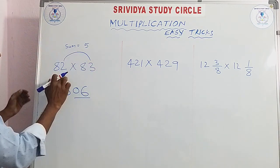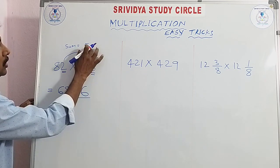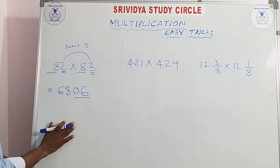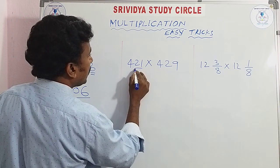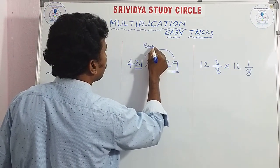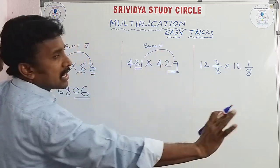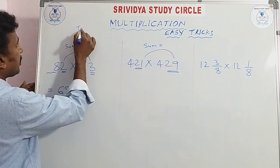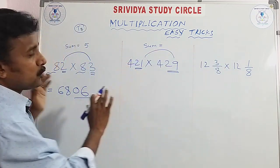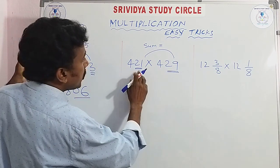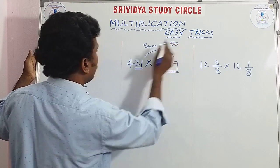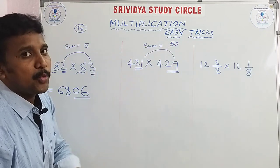The condition is: the units digits sum must equal 5. This is the same condition. This is trick number 8, trick number 13, trick number 15. This is the concept of this video. The next question follows the same concept.